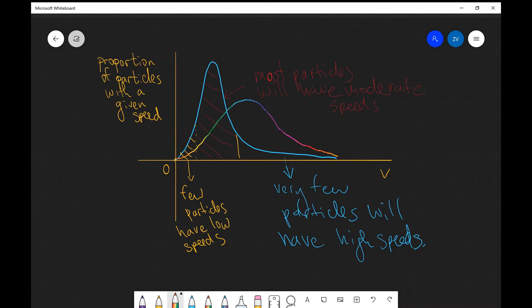A couple of notable features is that far more particles have higher speeds. So if you compare the bulk of this graph over here, a lot more particles have much higher speeds if we were to increase the temperature.